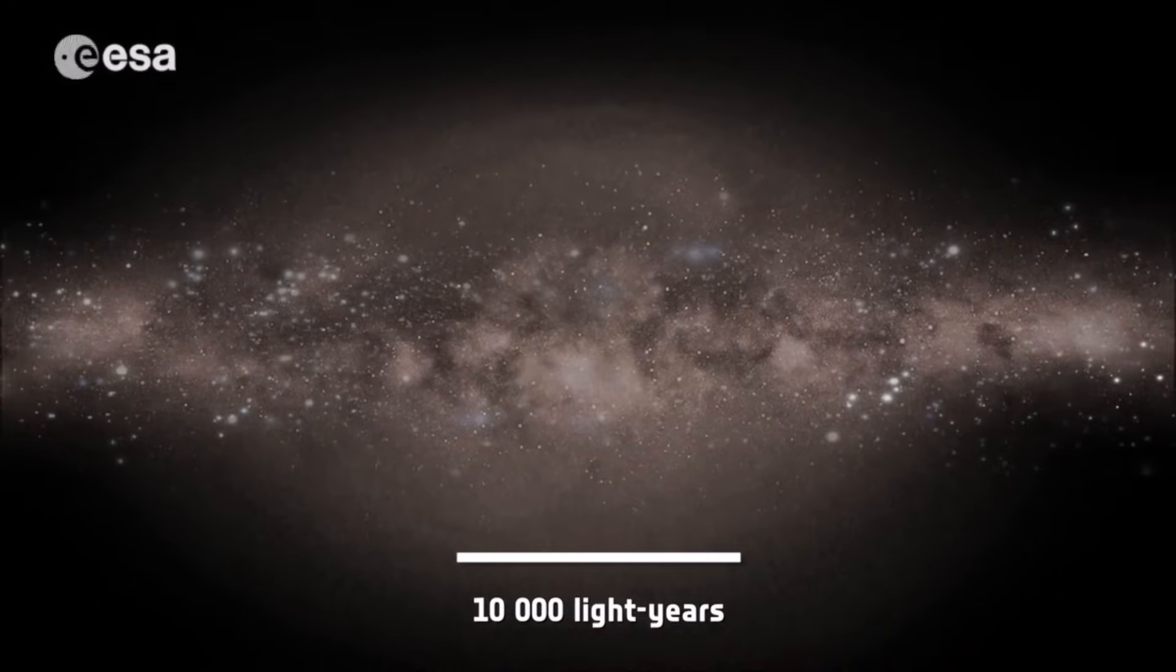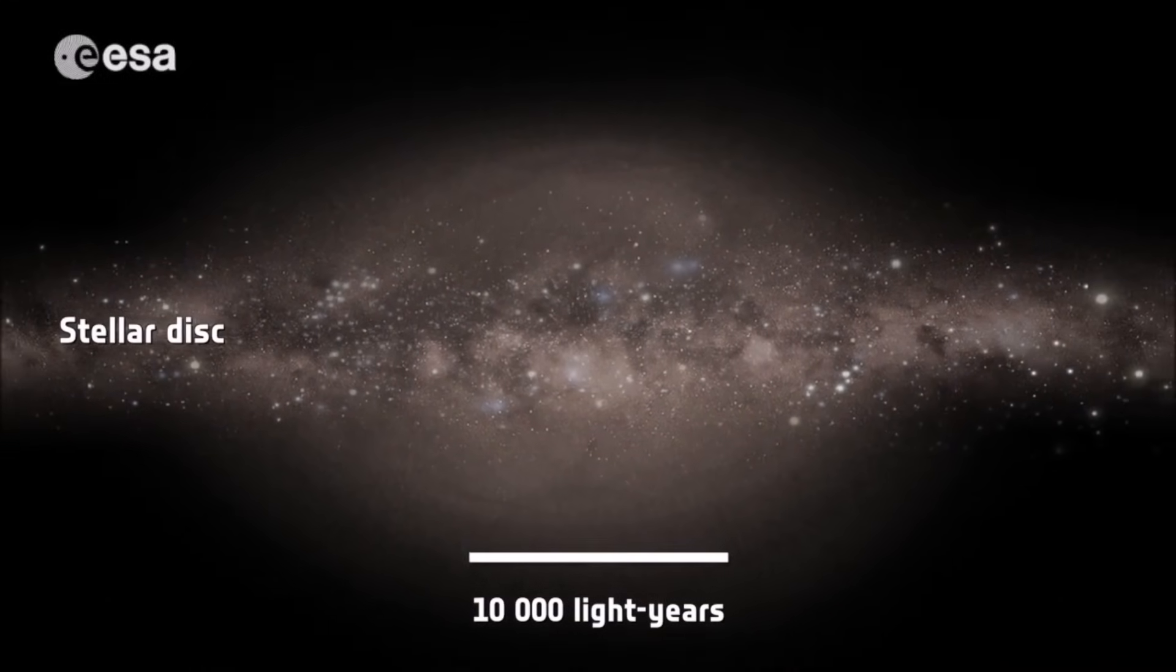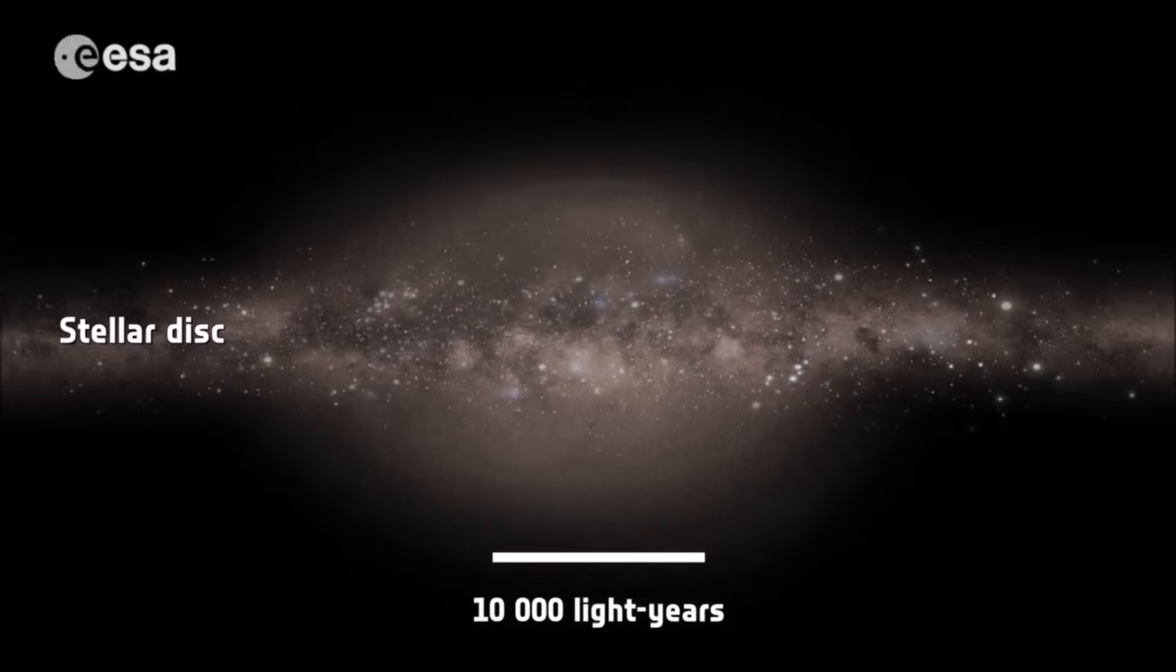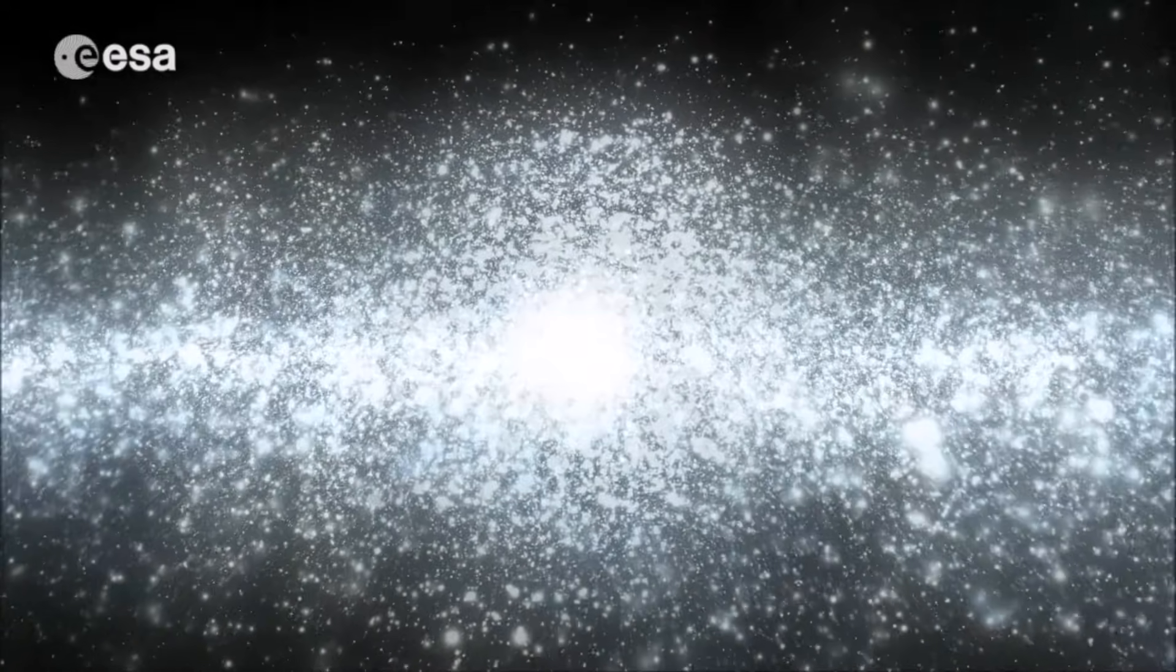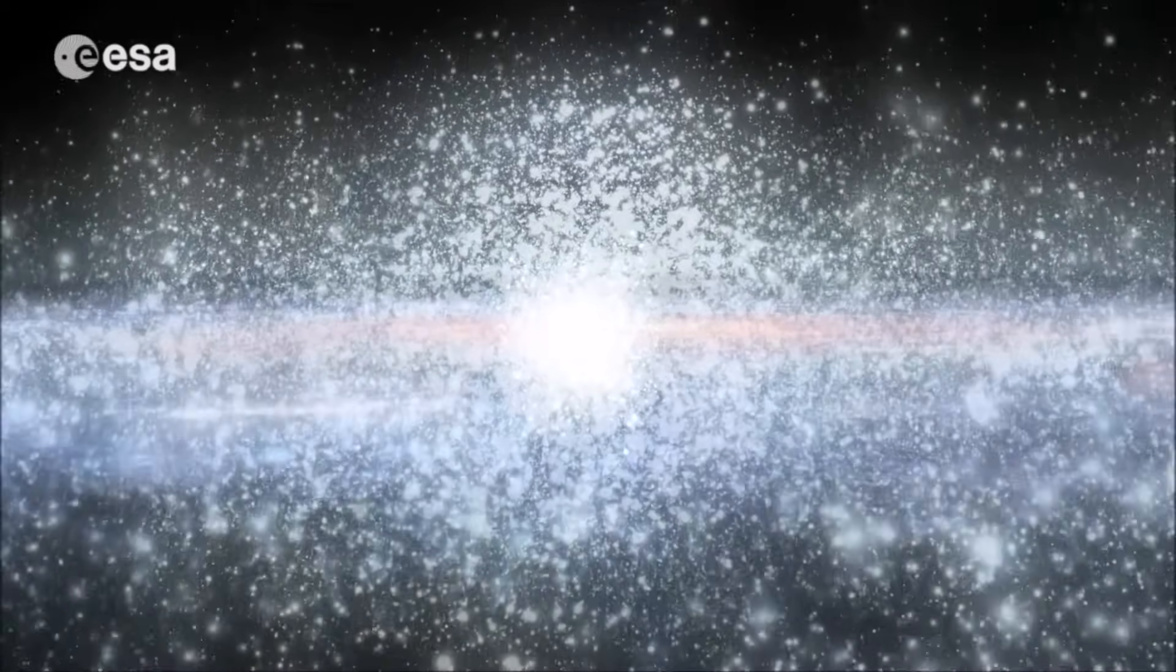Next is the disk, a flattened region surrounding the bulge in the center. The disk is about 100,000 light-years across. It is filled with young stars, gas, and dust, concentrated in the spiral arms.